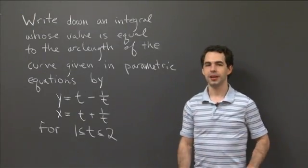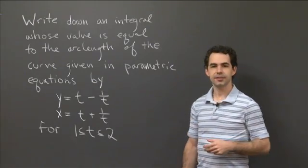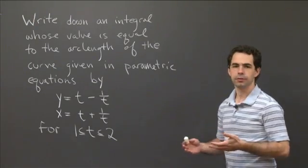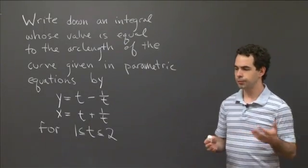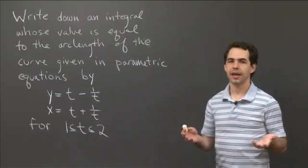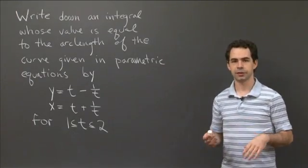All right, so I hope you've had some luck working this problem. Let's get started on it together. In order to compute the arc length by an integral, we need to figure out what the element of arc length is, that little piece ds. This was true when we had our curve given in rectangular coordinates, and it's also true when our curve is given in parametric coordinates.